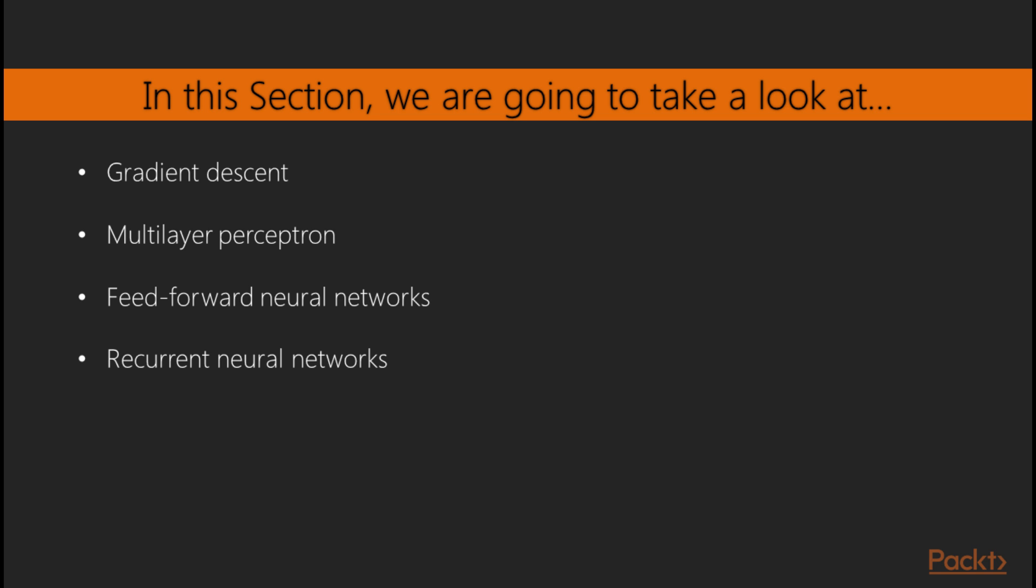we are going to talk about neural networks in detail. By the end of this section, you are going to know what they are, how they work, and how we can implement them in Java, which dominates the industry as number one software development language. We are going to start with gradient descent, and once we know what it is, we are going to start talking about well-known neural network implementations, such as feed-forward neural nets, multi-layer perceptron, and recurrent neural networks.